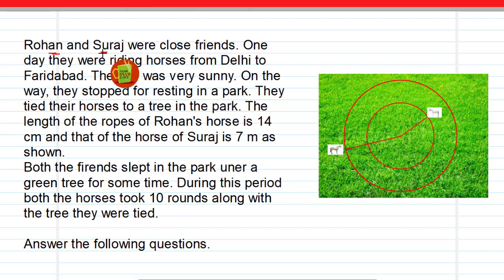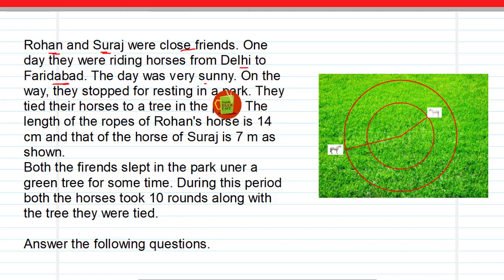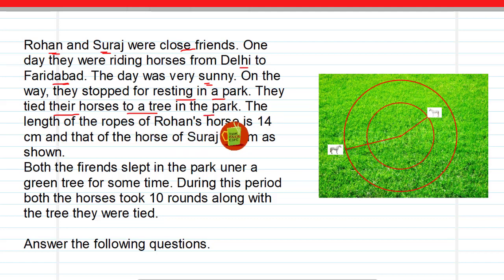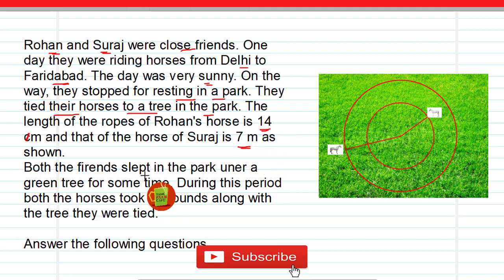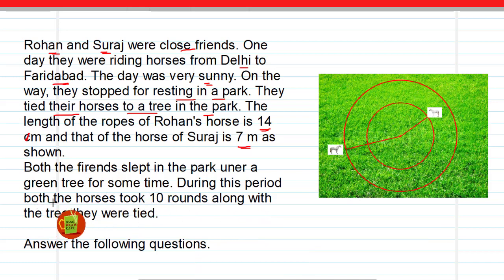The question is that Rohan and Suraj were close friends. One day they were riding horses from Delhi to Faridabad. The day was very sunny. On the way, they stopped for resting in a park and tied their horses to a tree. The length of the rope of Rohan's horse is 14 meters and that of Suraj's horse is 7 meters, as shown in the figure. Both the friends slept in the park, and during this period both the horses took 10 rounds around the tree they were tied to.